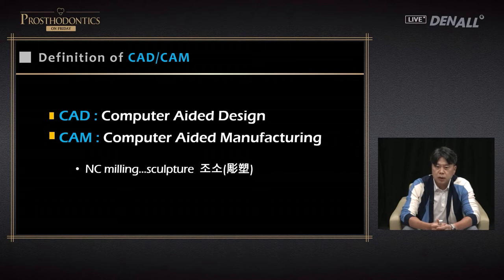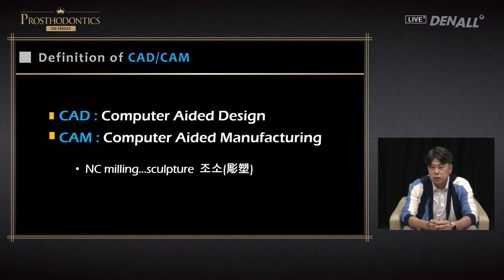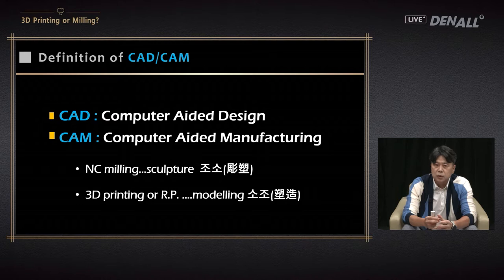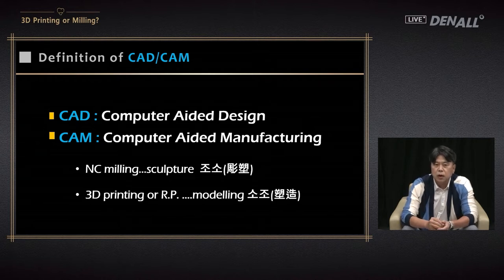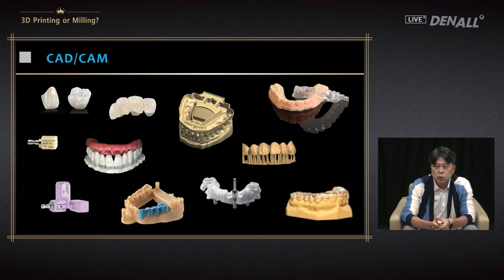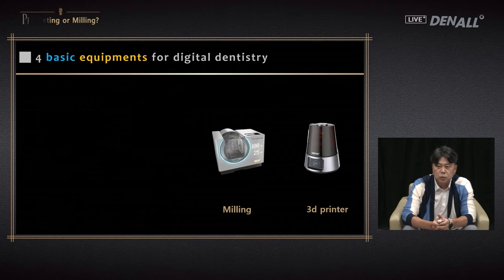There are two parts used in dental offices. First, NC milling — through numerical control, it is milled. In art, it is equivalent to sculpture: out of a marble block, using a chisel, a beautiful sculpture can be made. The other is 3D printing or RP. 3D printing creates something through build-up out of nothing — like pottery, you create a pot. In dentistry, milling machines and 3D printers are used to fabricate restorations and appliances.